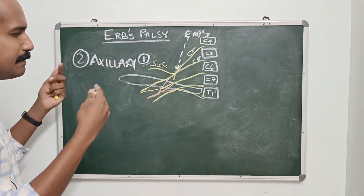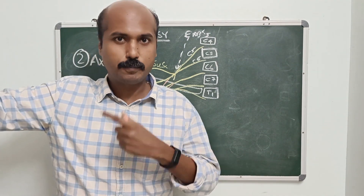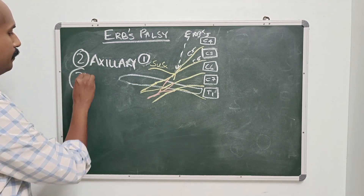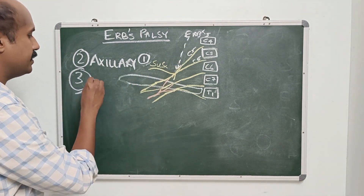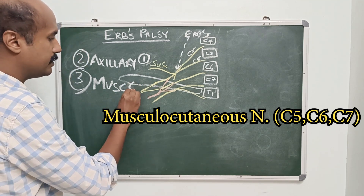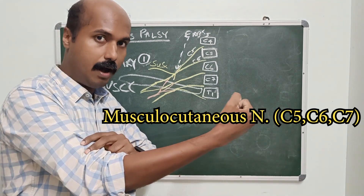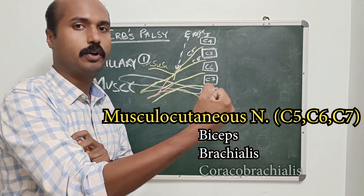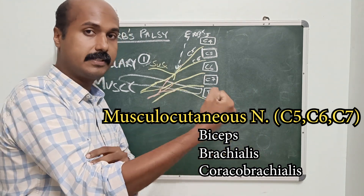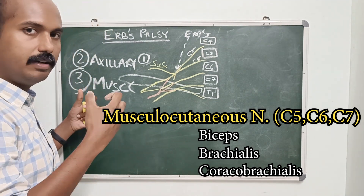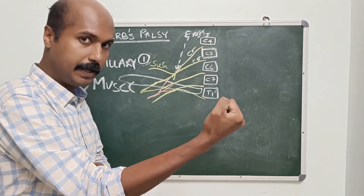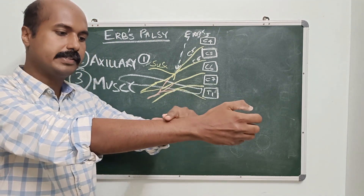So looking at this pattern, the first two nerves affect the muscles causing abduction — supraspinatus and deltoid — and lateral rotation — infraspinatus and teres minor. Another nerve predominantly affected in ERB's palsy through C5 and C6 is the musculocutaneous nerve, with root value C5, C6, and sometimes C7. The musculocutaneous nerve supplies the flexor compartment of the arm: the biceps, brachialis, and coracobrachialis. Biceps is a powerful supinator of the forearm and also a flexor, while brachialis is a powerful flexor. So the actions affected when the musculocutaneous is involved are flexion of the elbow and supination of the forearm. The musculocutaneous also has a cutaneous distribution as the lateral cutaneous nerve of the forearm.